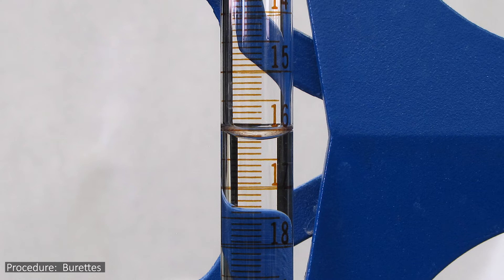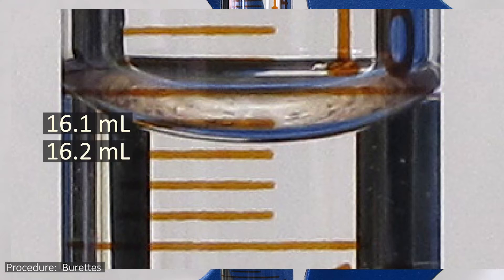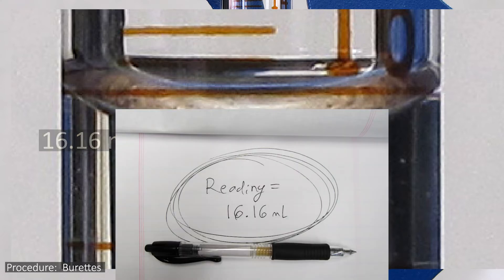To show you how to do this, let's look at a close-up image of the meniscus in a burette. The bottom of the meniscus here comes down to a point between the 16.1 mL and 16.2 mL marks. And if we use our imagination to divide the space between the markings into 10 segments, you can see it lines up best with the 16.16 marking. So we would record this as 16.16 mL.